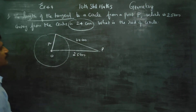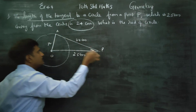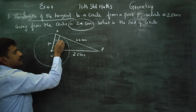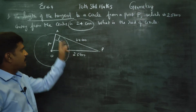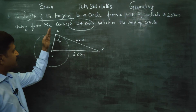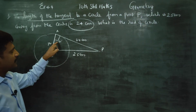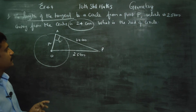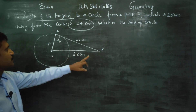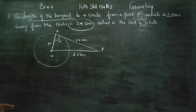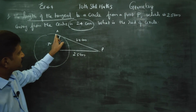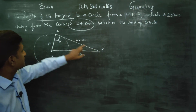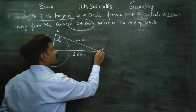What is the radius? The angle between the tangent and the radius is 90 degrees.